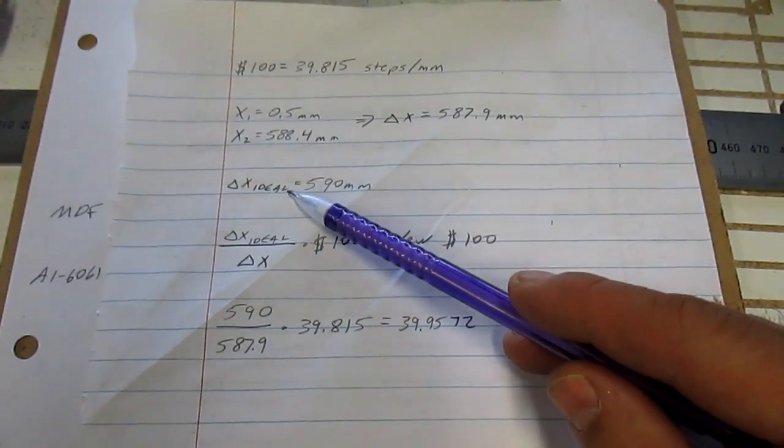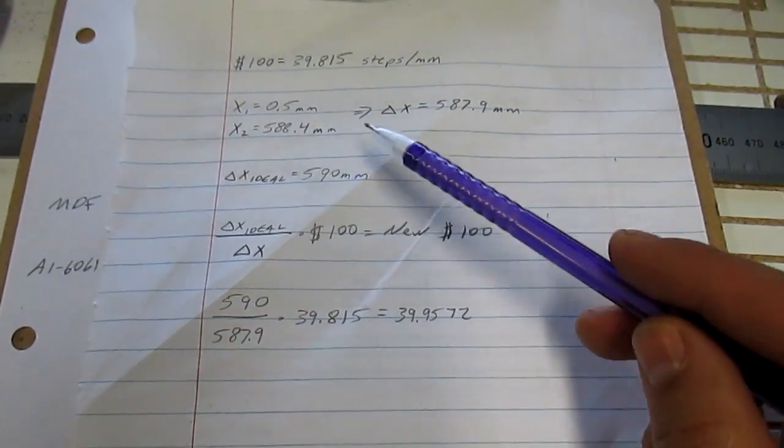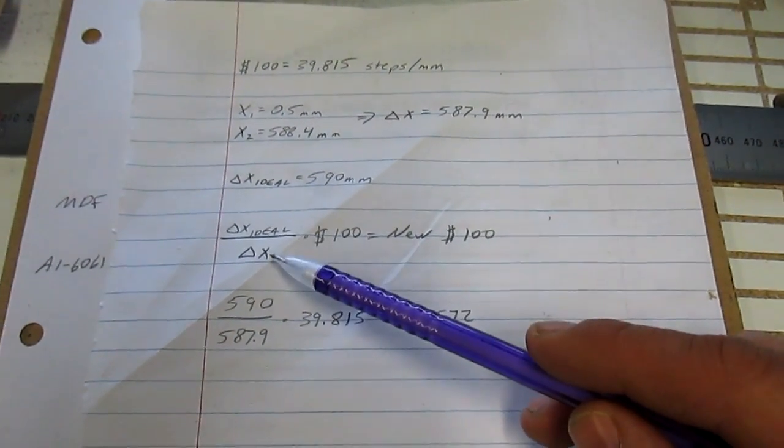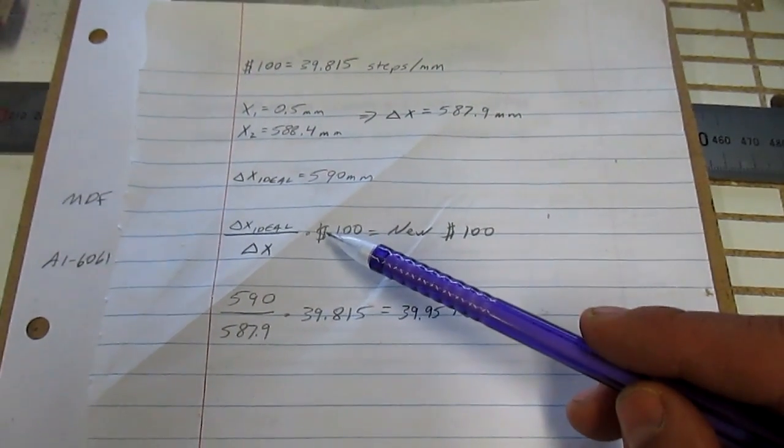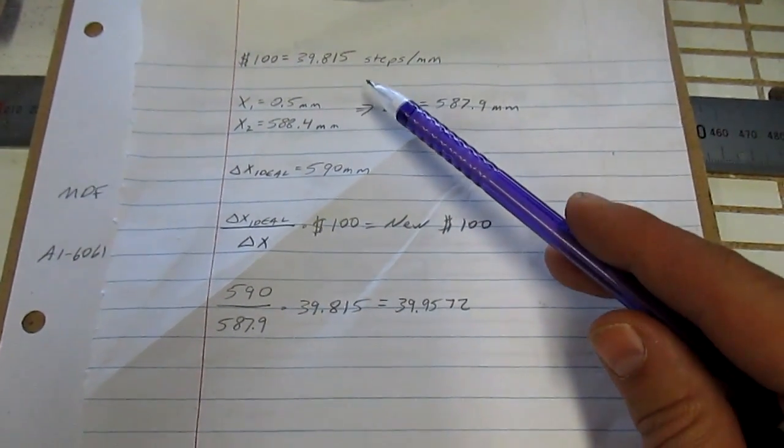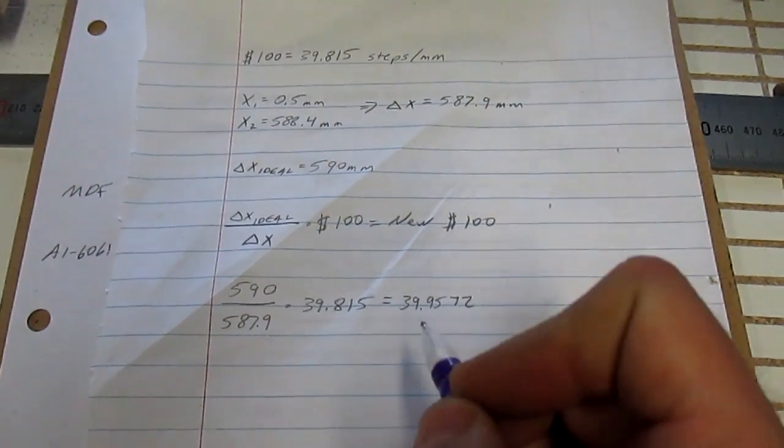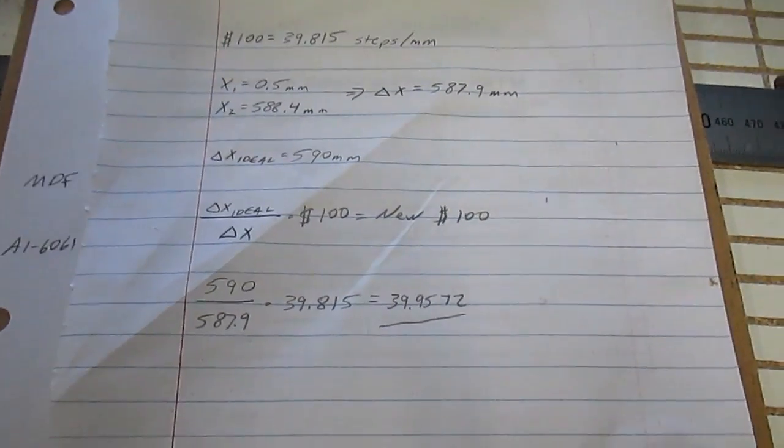Figure out what the distance should be ideally. Ideally, I was supposed to go 590mm and I only went 587.9. Divide your ideal by how far you actually went, multiply that by your steps per millimeter from up here, and that gives you your new setting. So you can see that I need to change my setting to 39.9572.